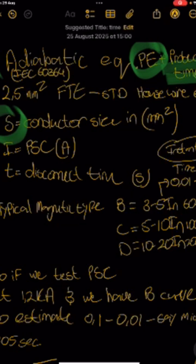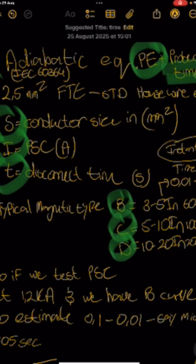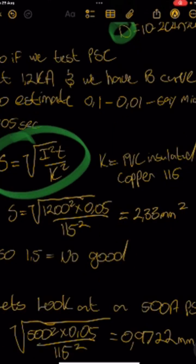S in the calculation is the conductor size in millimeters squared. I is your PSC measured at your control point. T is time taken depending on the spec of your circuit breaker. The B-spec will trip between three to five times its rated current — it'll trip instantaneously, meaning it'll trip from 0.01 seconds to 0.1 seconds. That'll be the trip time in the actual equation.